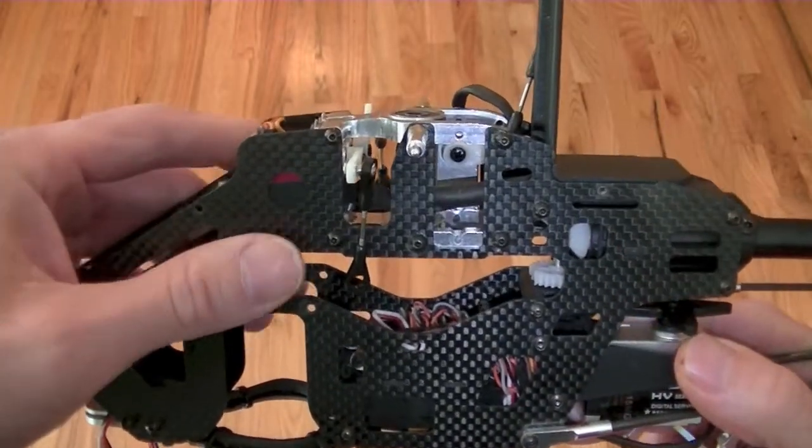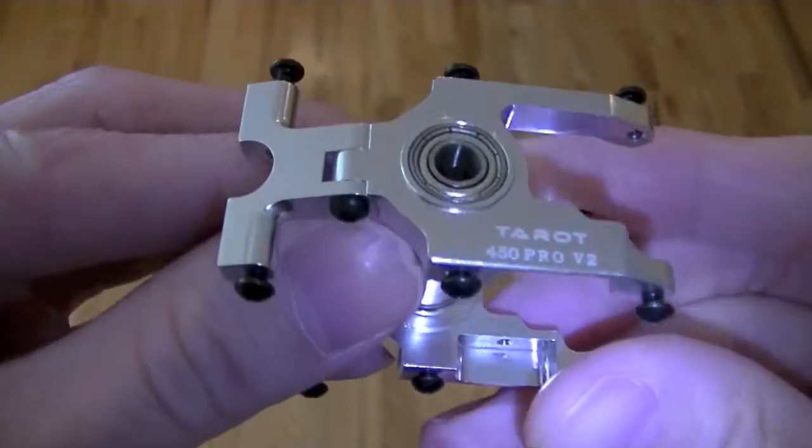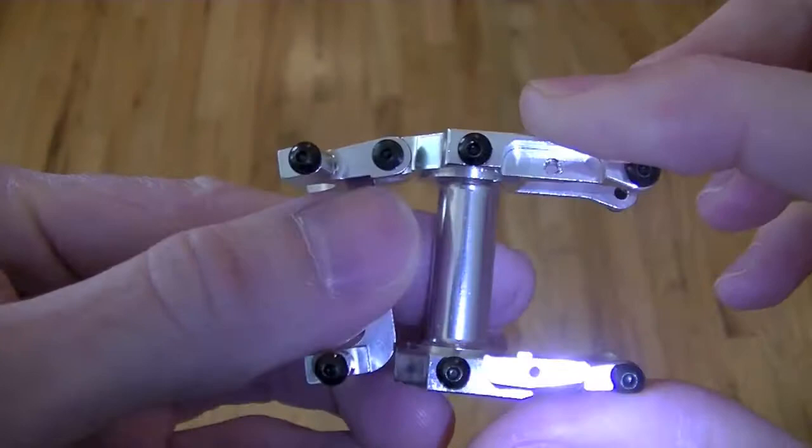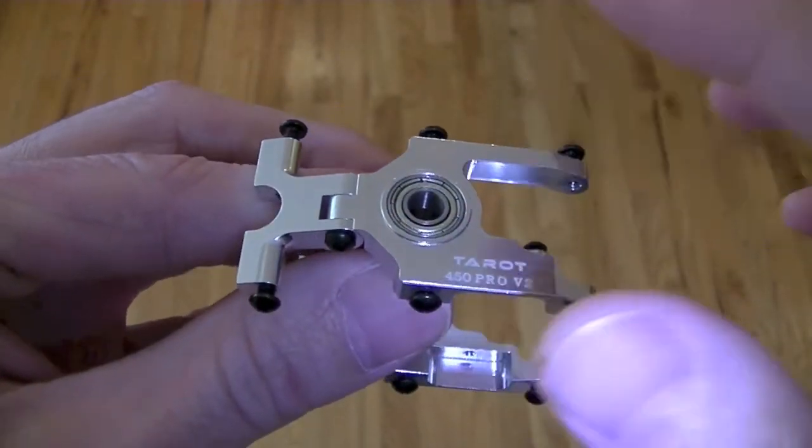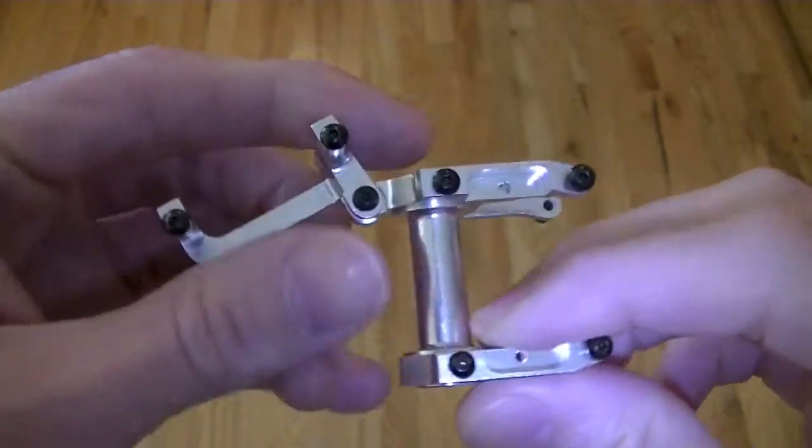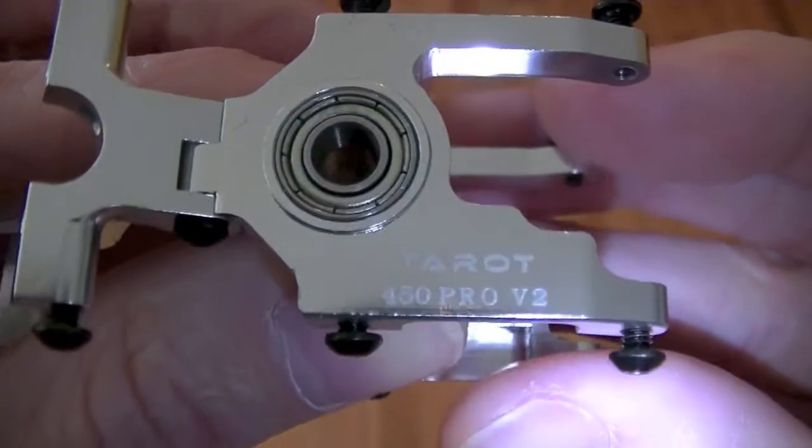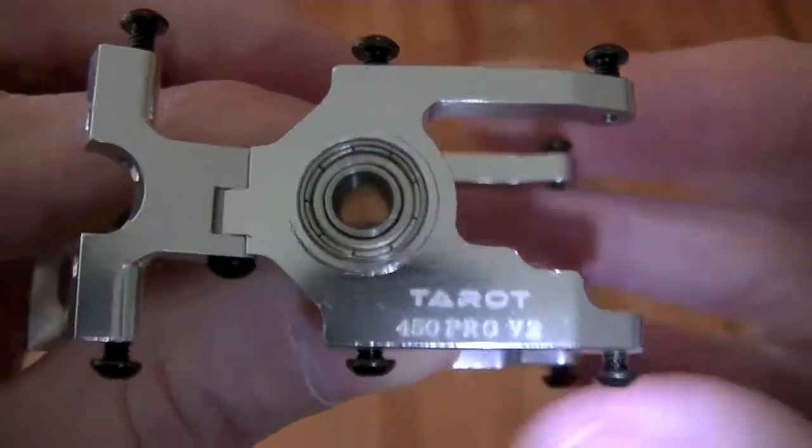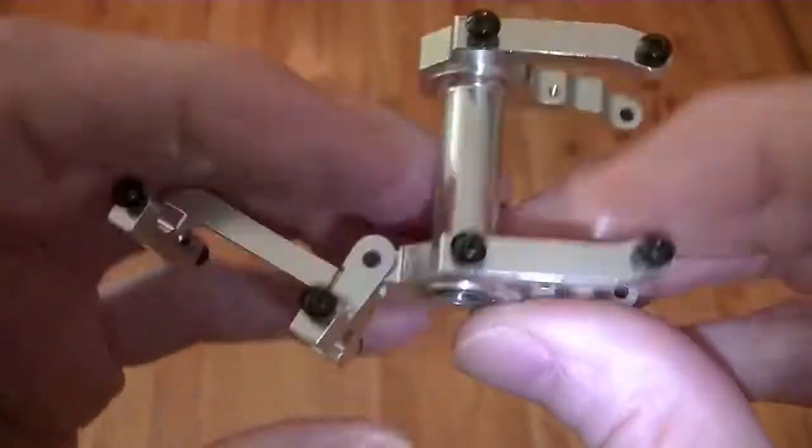So let's take a look at this thing first before I actually start putting it into the helicopter. This, like I said, is a one piece main shaft mount in the fact that both of the bearing blocks, the main bearing blocks, the top and the lower, are connected into one piece. This is a Taro product, you can see right there it says Taro 450 Pro V2, comes with both of the bearings, the upper and lower bearing.